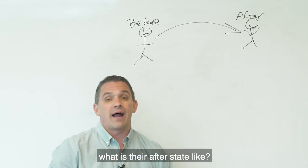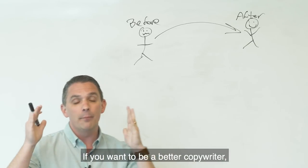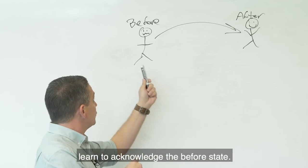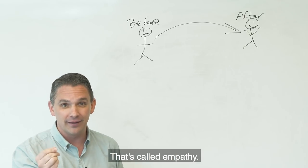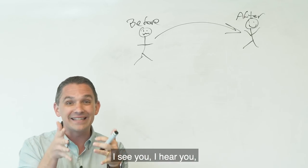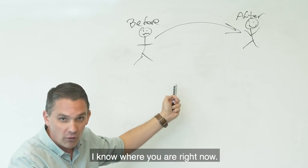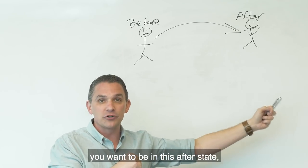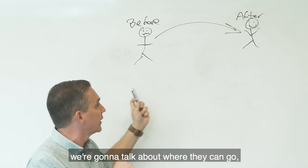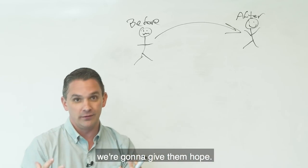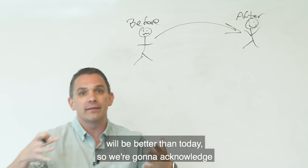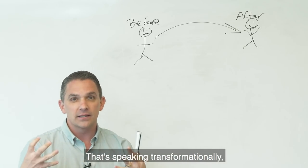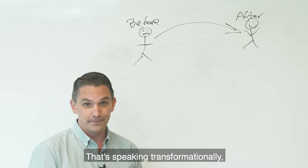What we simply want to be able to articulate is this transformation, this shift from the before state to the after state. What is their before state like? What is their after state like? If you want to be a better copywriter, if you want to be a better salesperson, if you want to be a better marketer, learn to acknowledge the before state. That's called empathy. I understand where you are. I see you. I hear you. I know where you are right now. But don't just leave them there. Say, and I know where you want to be. You want to be in this after state. So we're going to meet them where they are, but we're not going to leave them there. We're going to talk about where they can go. We're going to give them hope. Hope is simply the promise that tomorrow will be better than today.